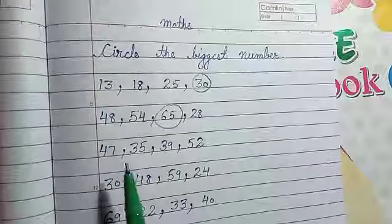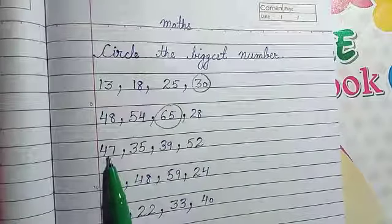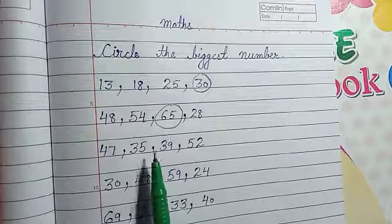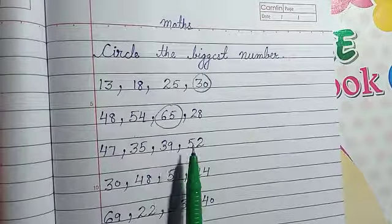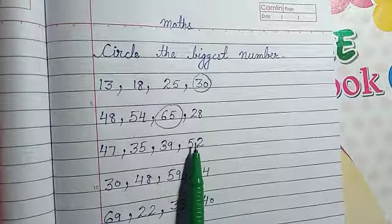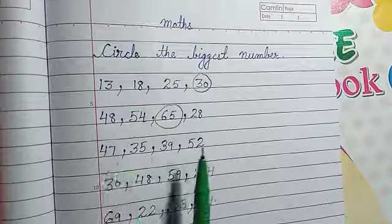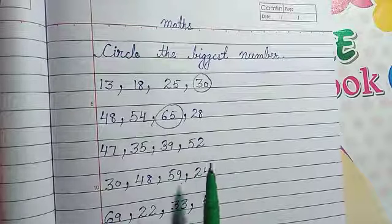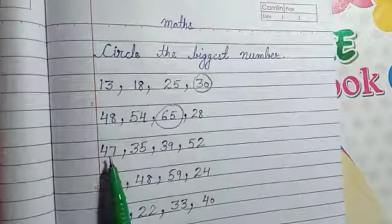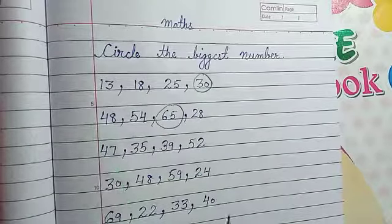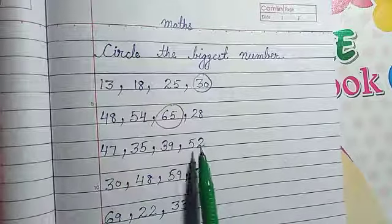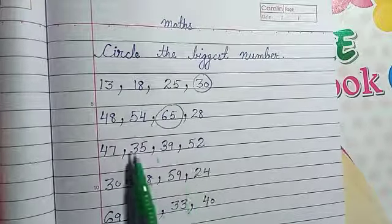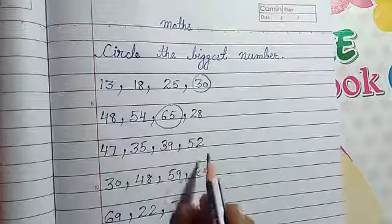Next, here is 47, 35, 39 and 52. Which is the biggest of all number? 47. Sorry, 52. 52 is the biggest of all number.